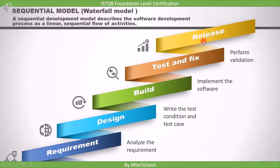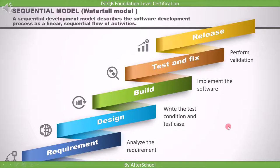The activities in the sequential model are in a linear flow: requirement, design, build, testing, and release. However, this model has a drawback — until we finish the first three steps, we don't test the software. We only test it once we reach that stage, which is a big disadvantage and is the reason we usually choose to work with other models.